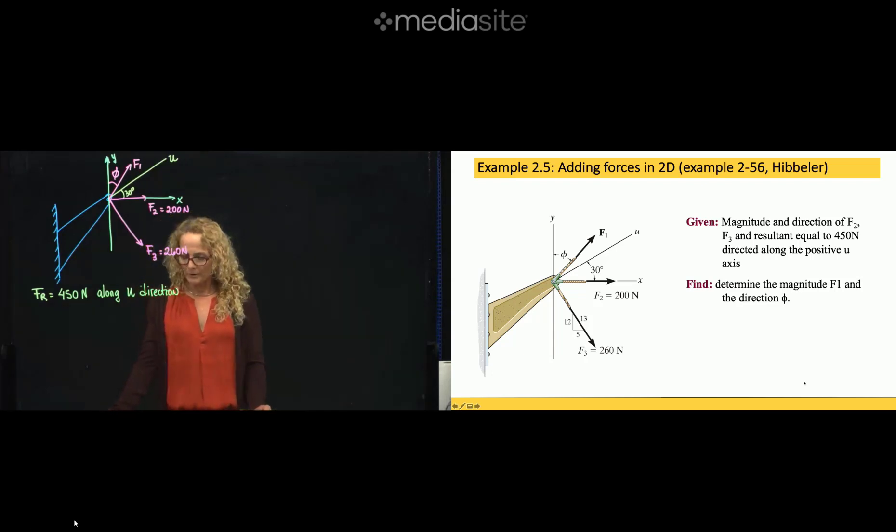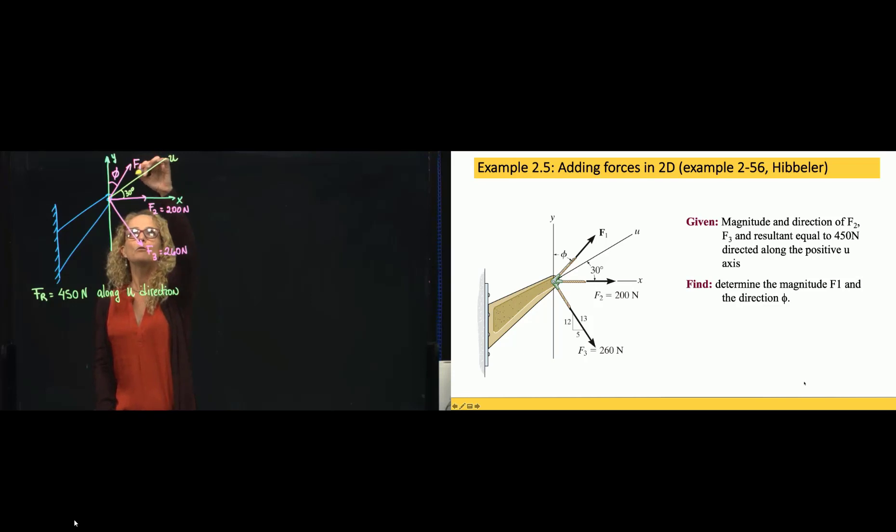This is problem 2.5 of chapter 2. We'd like to find F1, magnitude and direction, and they give us the resultant, and they tell us that the resultant force has a magnitude of 450 newtons along the positive axis u.